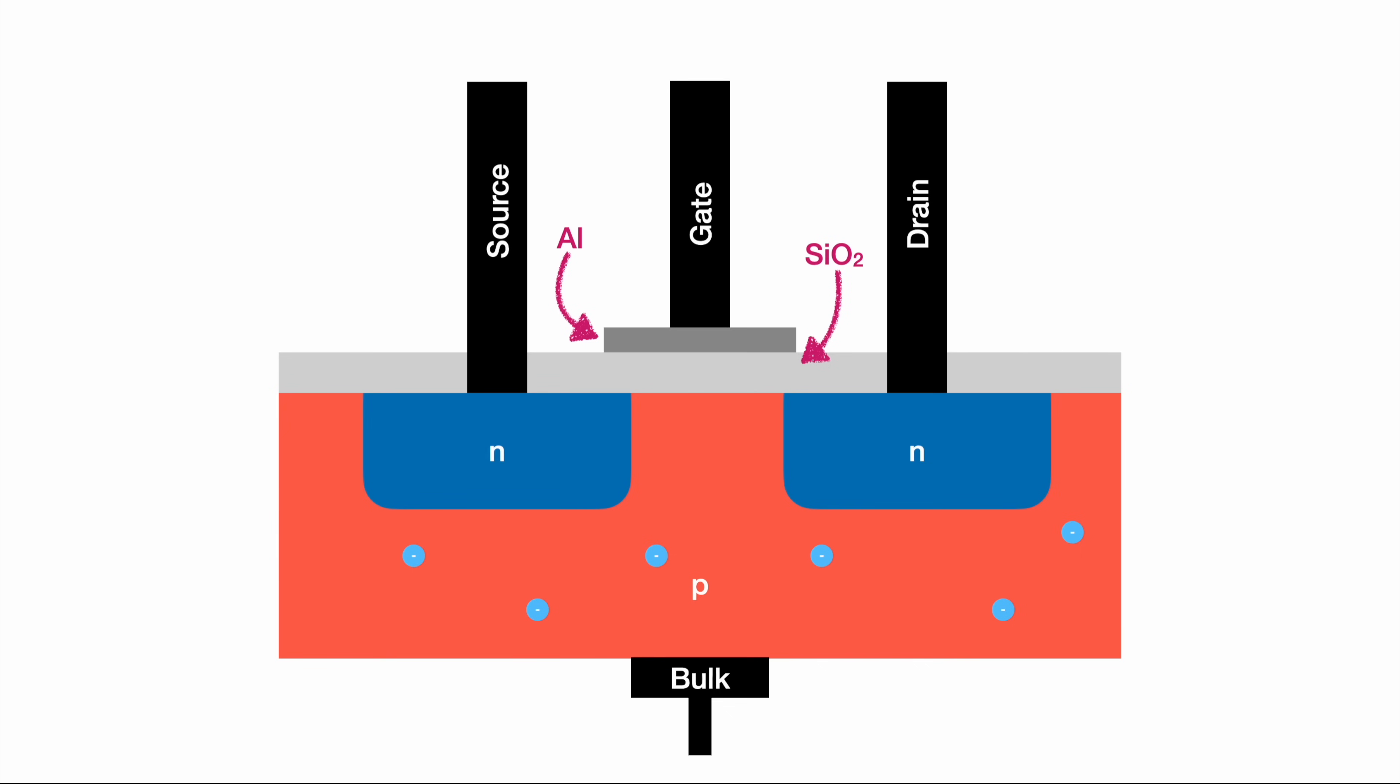When using our MOSFET, electrons arrive at the source attempting to travel towards the drain. Being separated by the positive doped area, we need to apply some magic to enable those electrons to overcome this barrier.